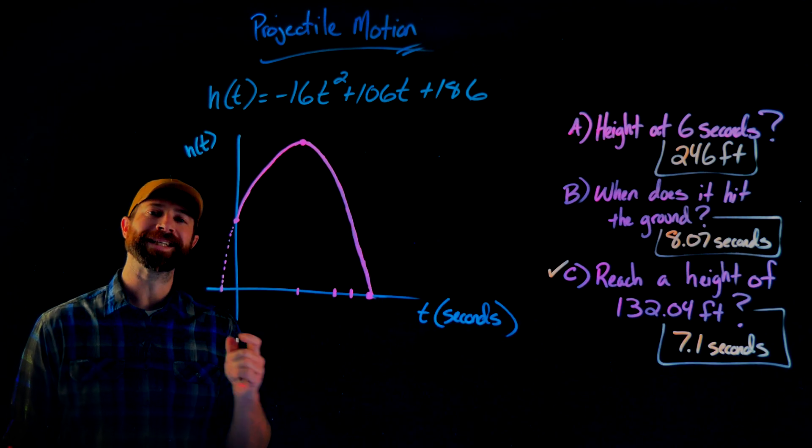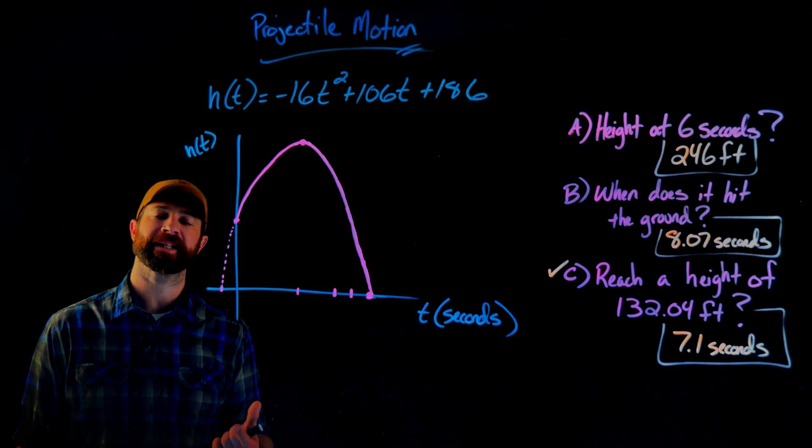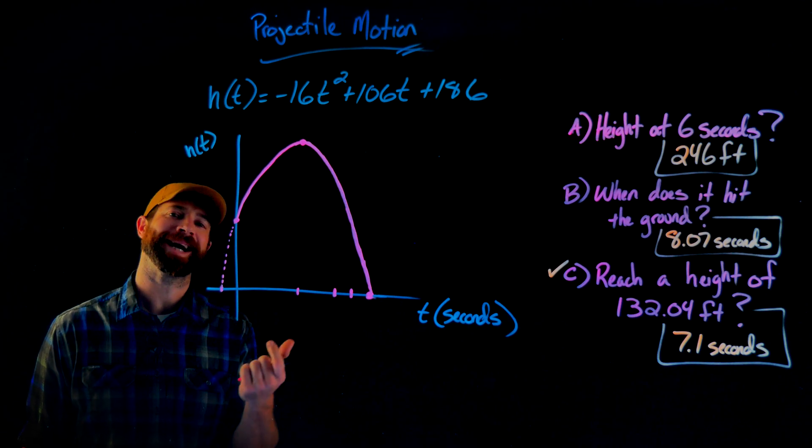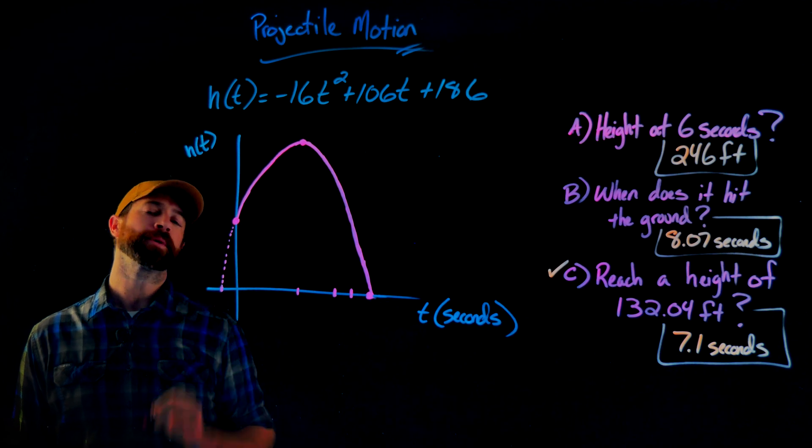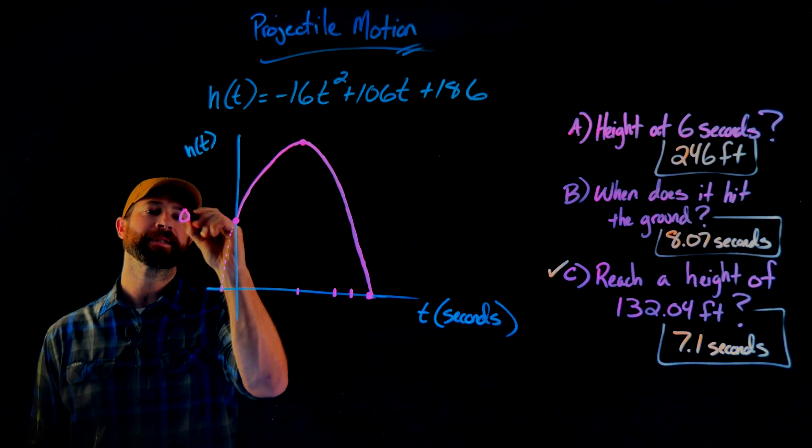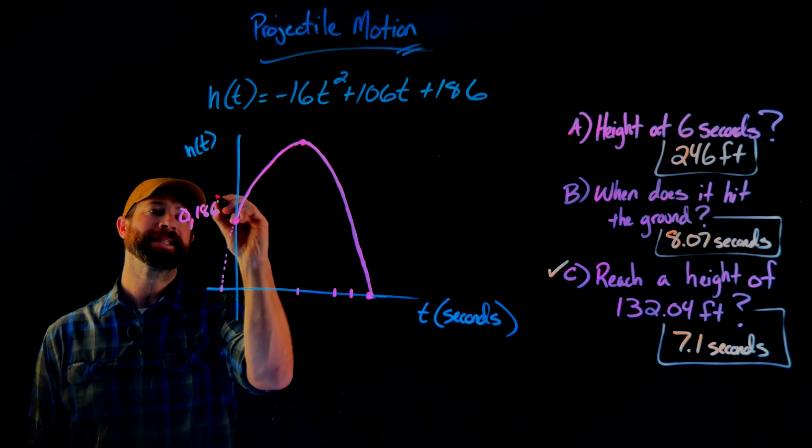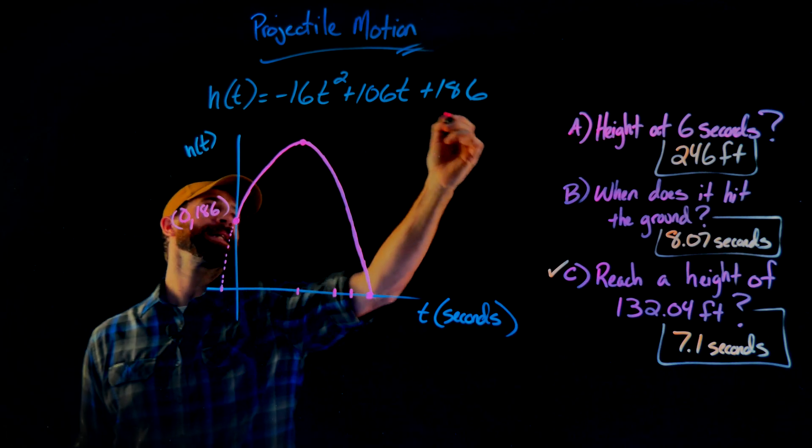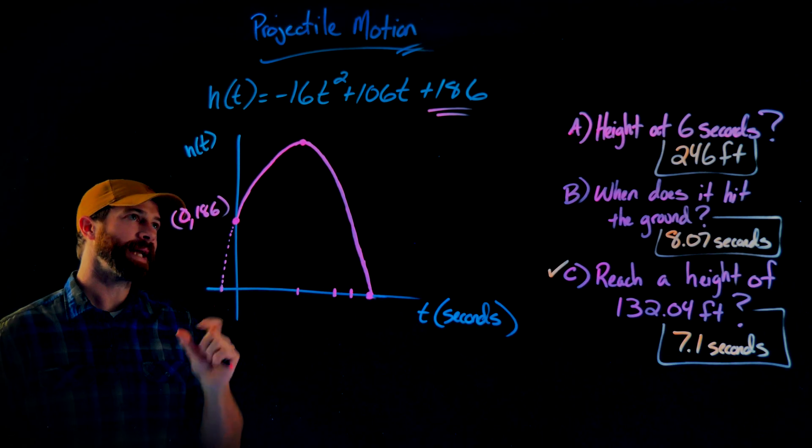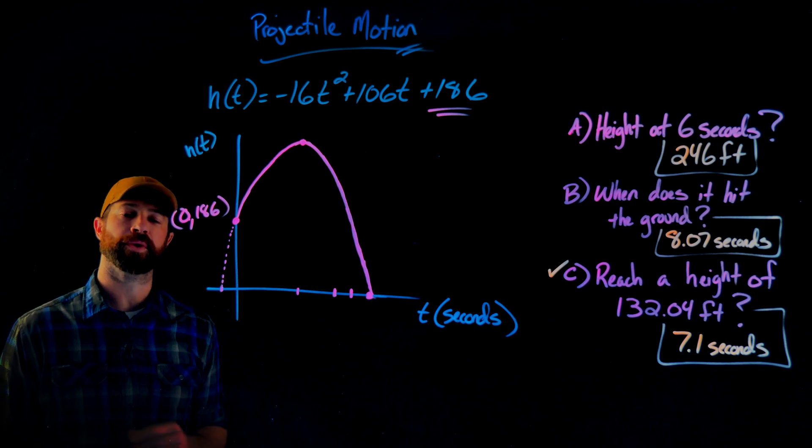Before we finish, I just wanted to recap this with the graphical representation of this relationship between time and height. First of all, this point right here, this y-intercept is 0, 186. That's represented by the constant here, C. That is the height where this object started when it was launched or thrown.